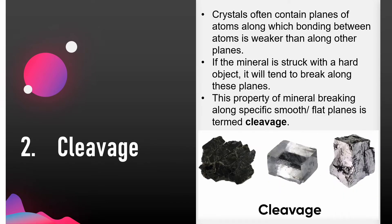The second property is cleavage. Crystals often contain planes of atoms along which bonding between atoms is weaker than along other planes. In such a case, if the mineral is struck with a hard object, it will tend to break along these planes. This property of a mineral breaking along specific smooth flat planes is termed cleavage. Cleavage can also be described in terms of its quality — if it cleaves along perfect planes it is said to be perfect, and if it cleaves along poorly defined planes it is said to be poor.